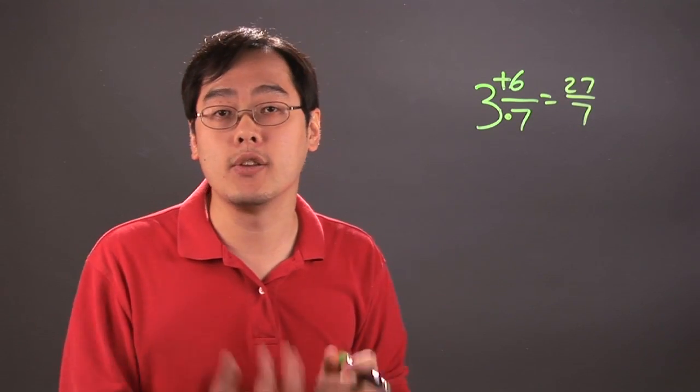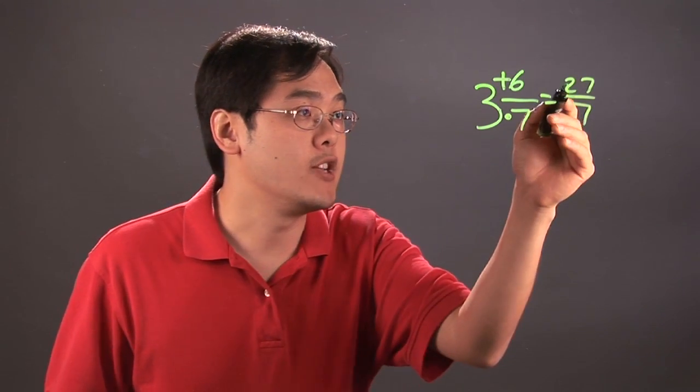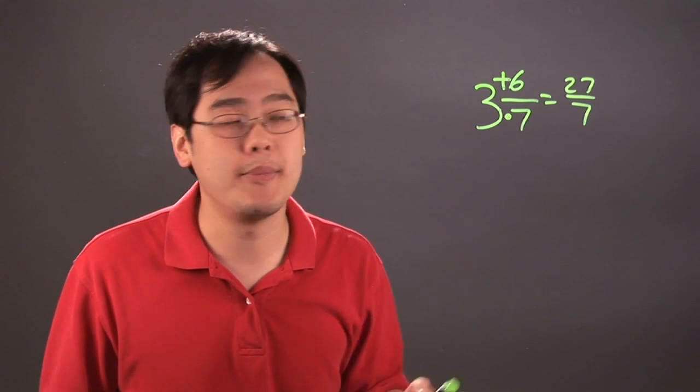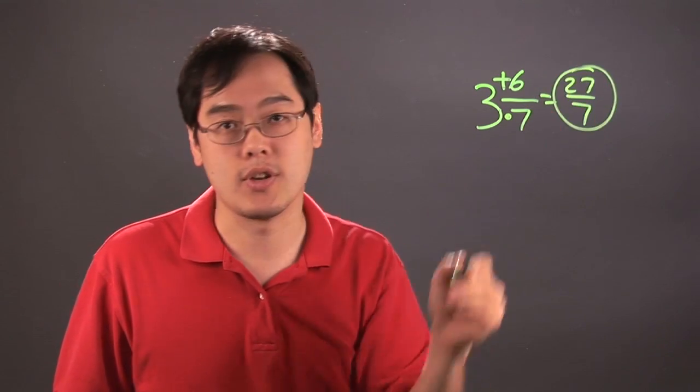And then and only then can you see if you can reduce here. As you can see, 27 over 7, they don't really have any factors in common. So that's actually the best thing that you can do.